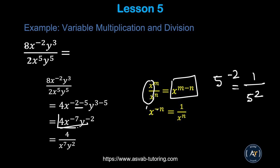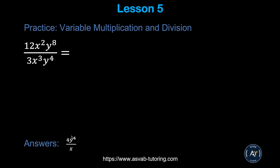The answer can appear in different forms in the practice test or actual test. Since x to the power negative 7 equals 1 over x to the power 7, and y to the power negative 2 equals 1 over y squared, the final answer is 4 over x to the seventh power times y squared. Make sure you understand this concept since you don't know what format the answer will appear in on the test. There is another practice problem — try it by yourself.